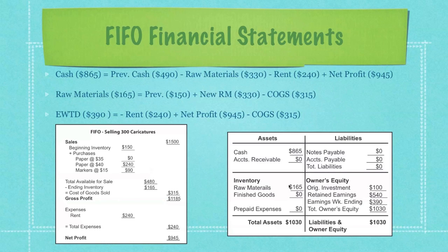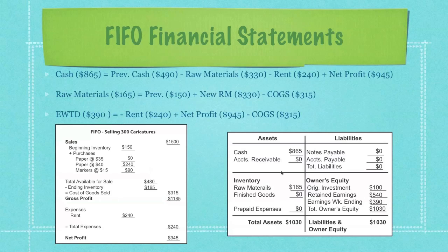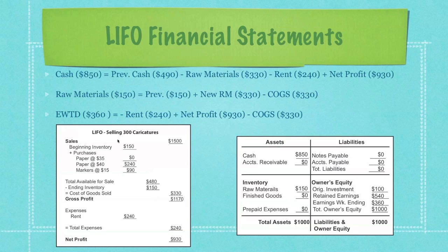That gives us our final cash amount of $865 and our remaining raw materials of $165, which we take from ending inventory. So that's how you move things from the income statement over to a balance sheet. Remember, we had $150 in raw materials, we purchased $330 of additional raw materials, and we subtract out cost of goods sold to get our final raw material amount. Earnings week to date was found by subtracting out rent, adding in net profit of $945, and the cost of goods sold, to get $390 in earnings week ending for a first in first out financial statement — meaning an income statement and a balance sheet. When you add all these up, of course this is a balance sheet, so everything balances.